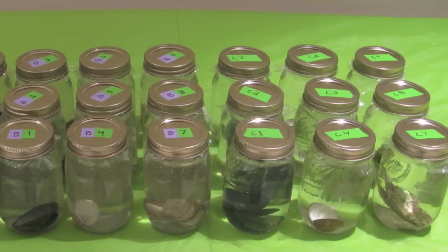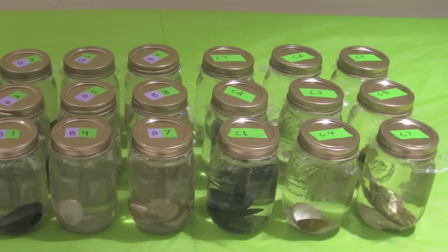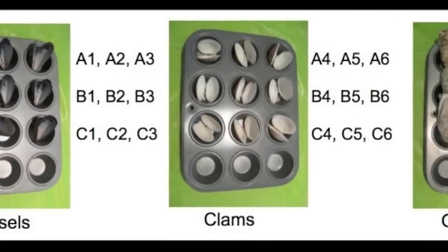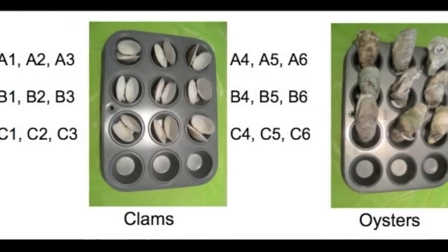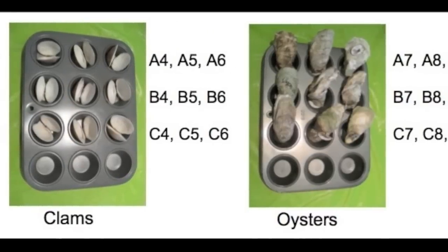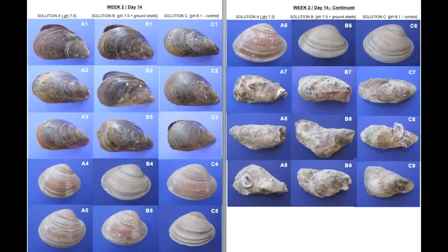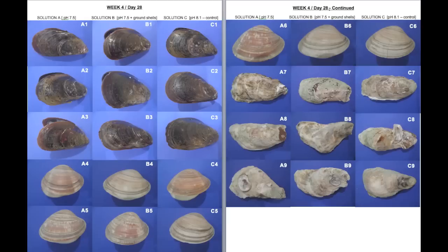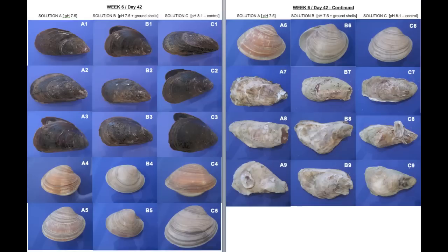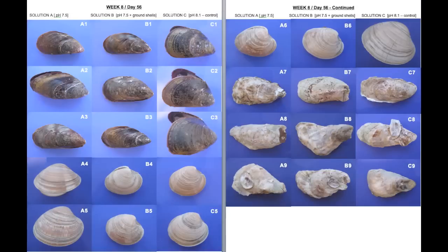In each solution, I used three replicates of mussel, clam, and oyster shells. Every two weeks for 12 weeks, I measured the pH of all the solutions, weighed, and photographed the shells.